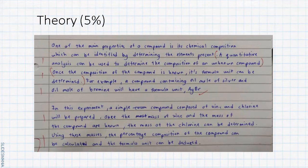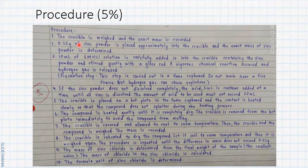After the theory, next is procedure. Once you change the procedure 1 until 10 with the passive form, you can get five marks.